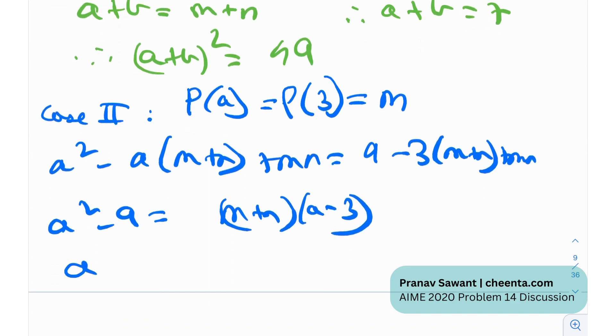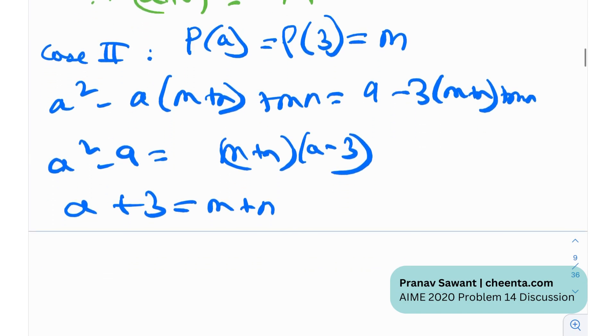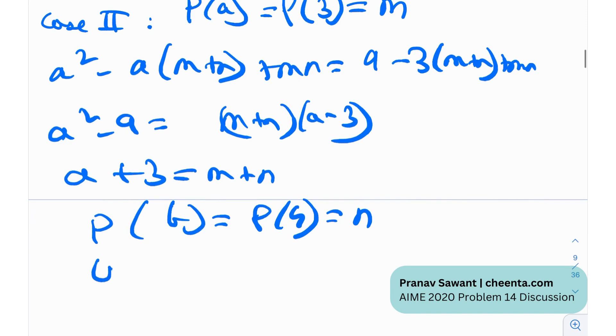This is one thing that I get, and another thing that I can get is similarly, basically, p of b equals p of 4 equals n, and from this I will get b plus 4 equals m plus n. You can do the calculation, but essentially you would reach at this point.